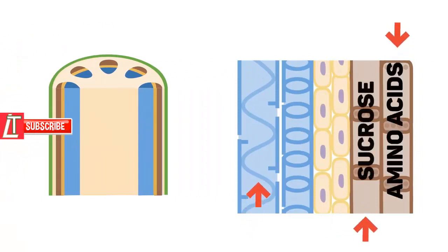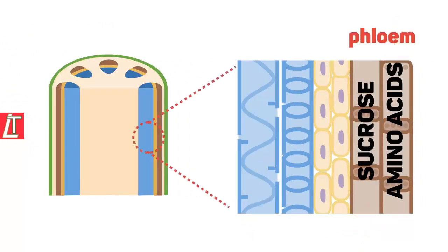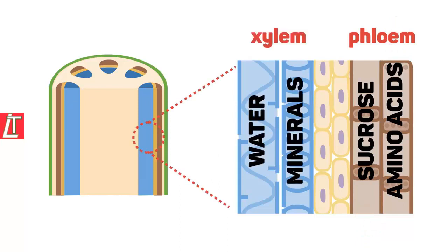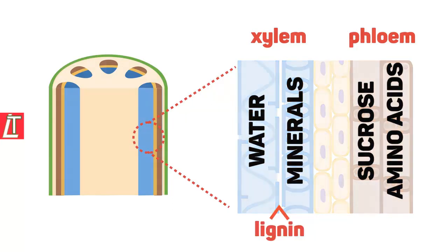Sucrose, a sugar, and amino acids are transported in the phloem and water and minerals move up through the xylem. The xylem has a substance called lignin which helps keep the stem upright.